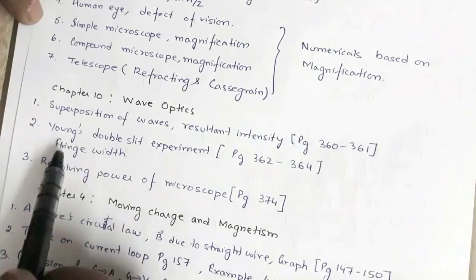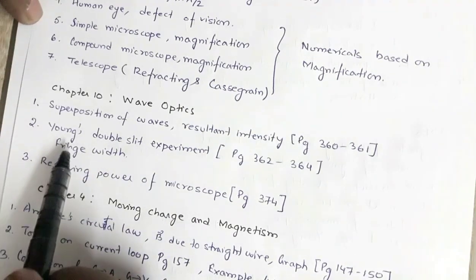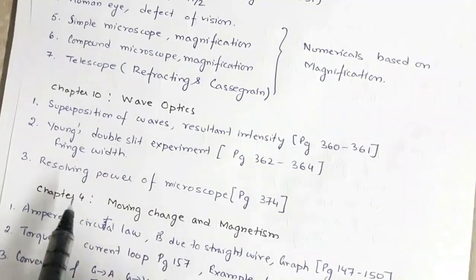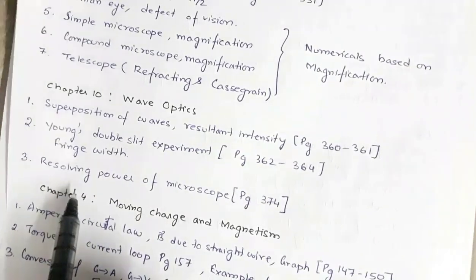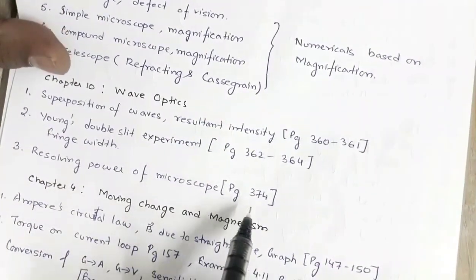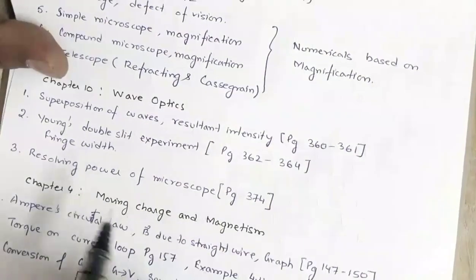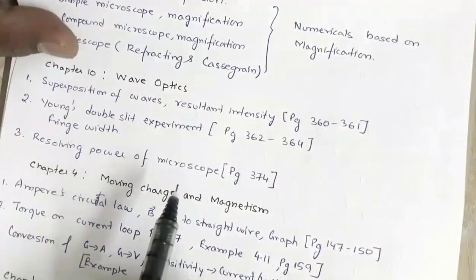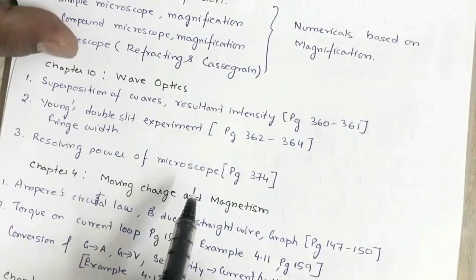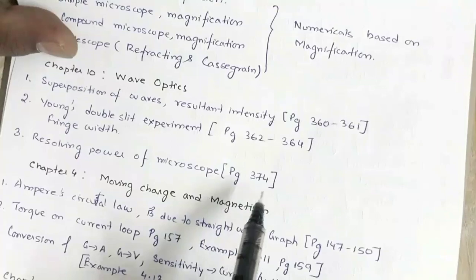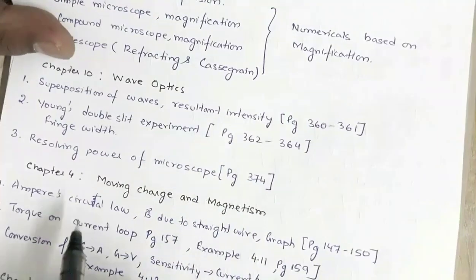Then the resolving power of a microscope, given on page number 374 — how the resolving power depends on wavelength and other factors. You must go through this topic.